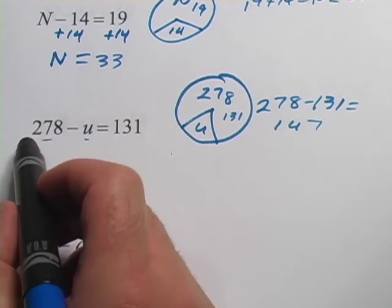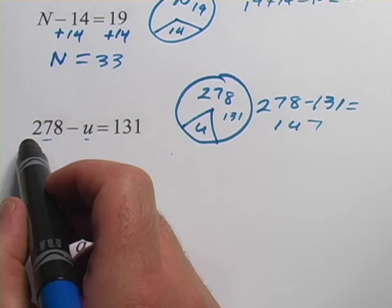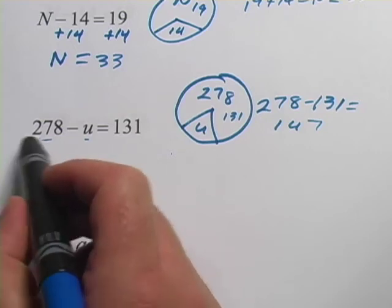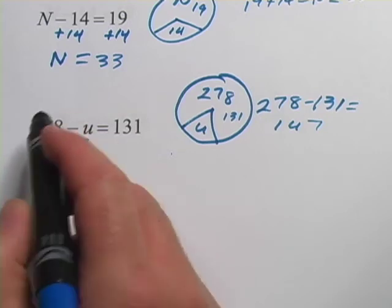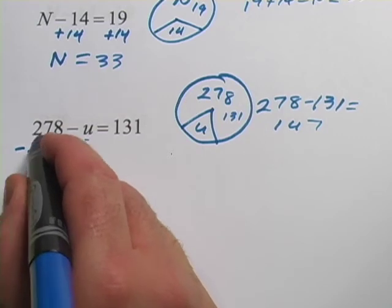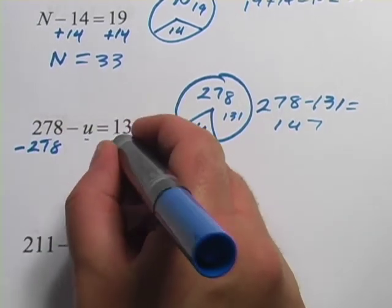There's no sign here. There's no positive or negative sign. But when there's no sign, it's positive. To undo a positive 278, a plus 278, we're actually going to subtract 278 from both sides.